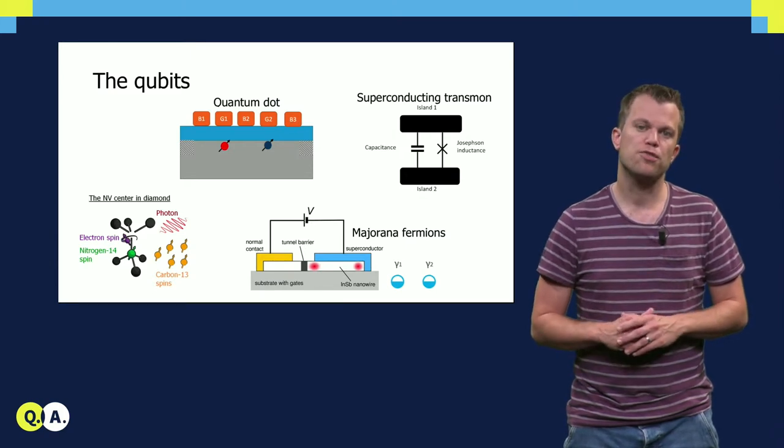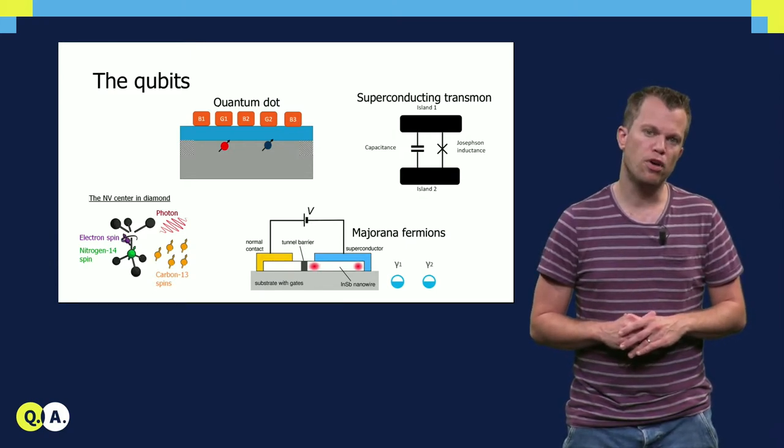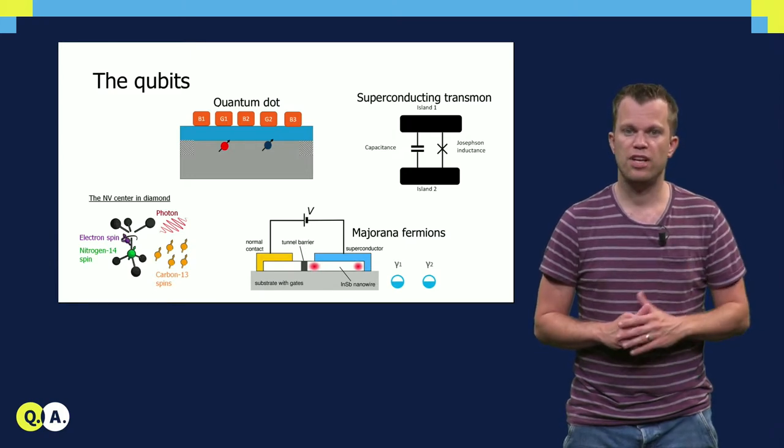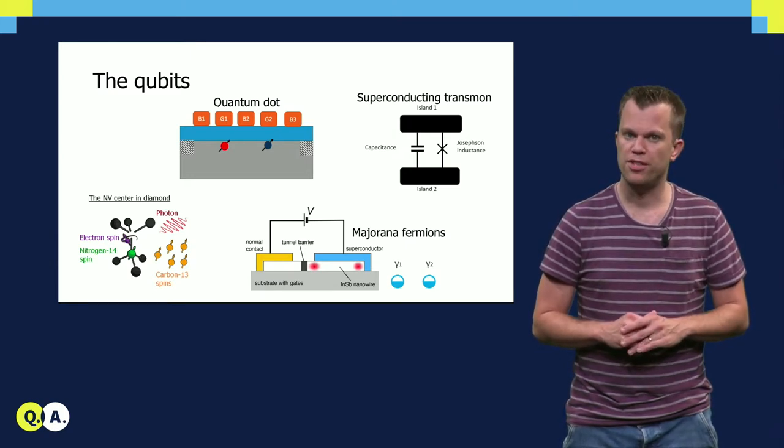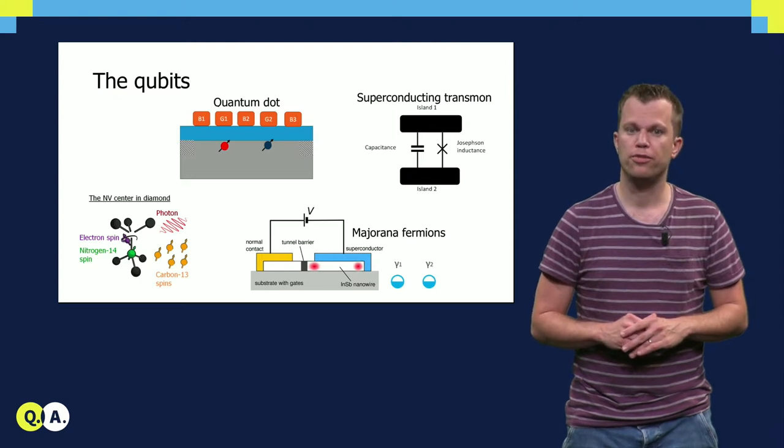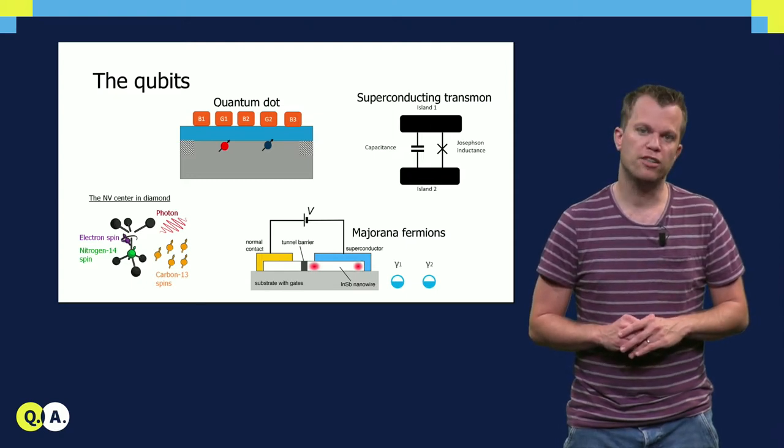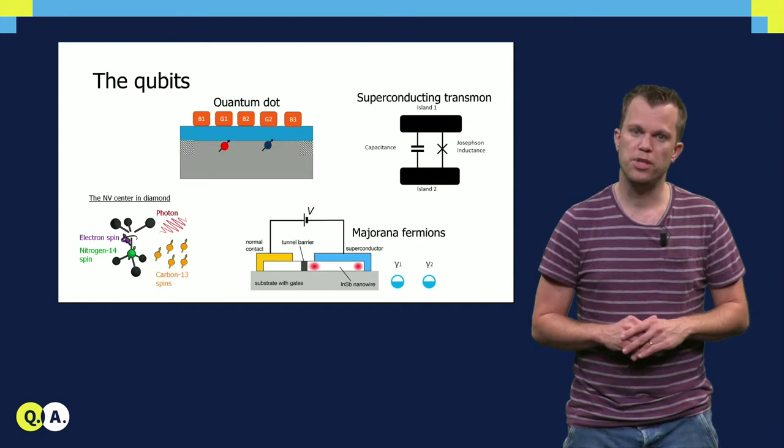In addition, the strong confinement leads to small overlap with other states. And these centers in diamond are particularly interesting as they can be coupled to photons, providing an optical link between spin qubits that are distant from each other.